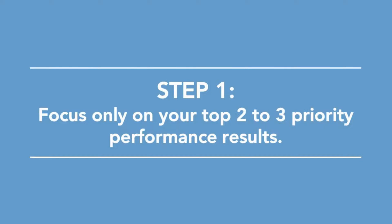Now to get your first performance dashboard iteration set up, five simple steps are all you need. Step one is to focus only on your top two or three priority performance results or goals. Stop trying to do it all at once perfectly — it's expensive, it's time consuming, and it's momentum sapping.